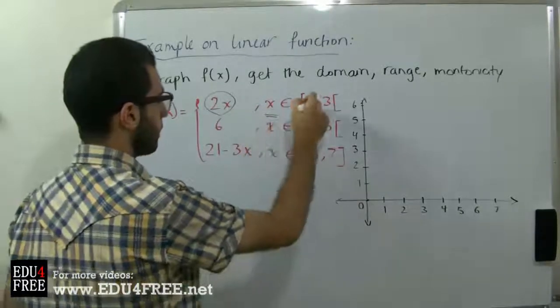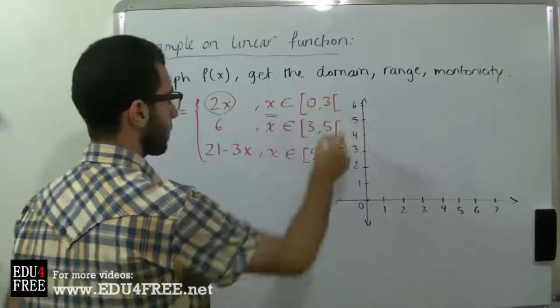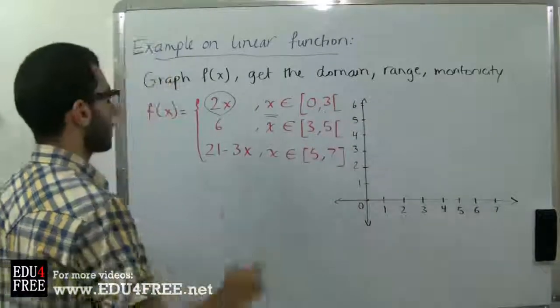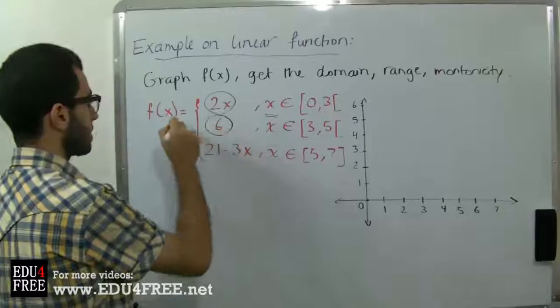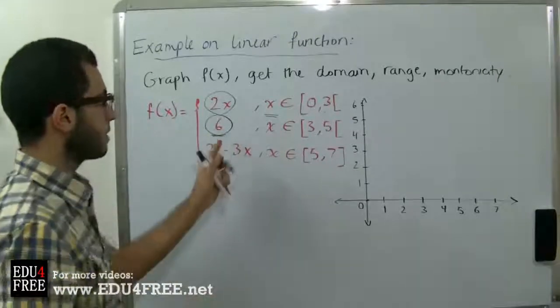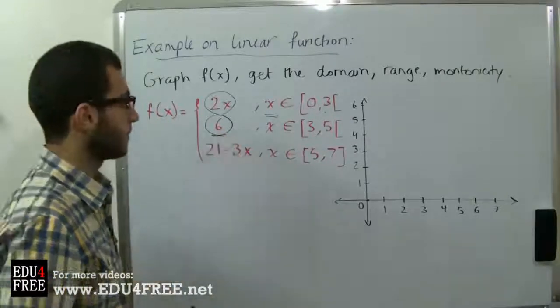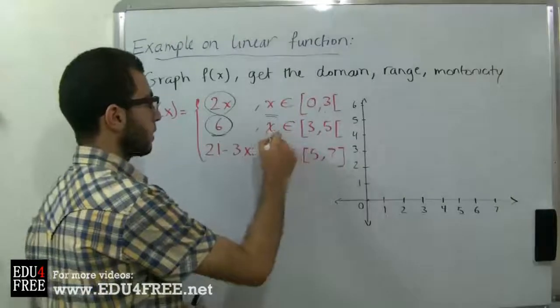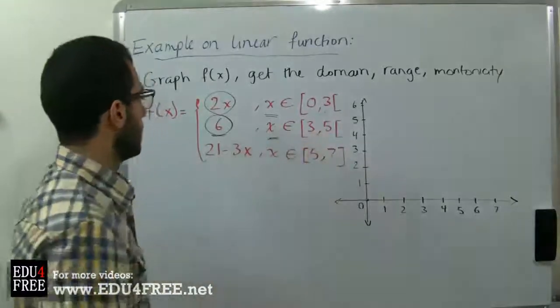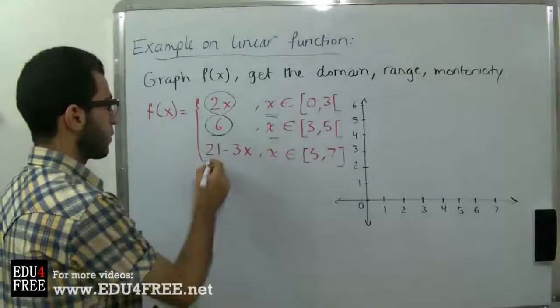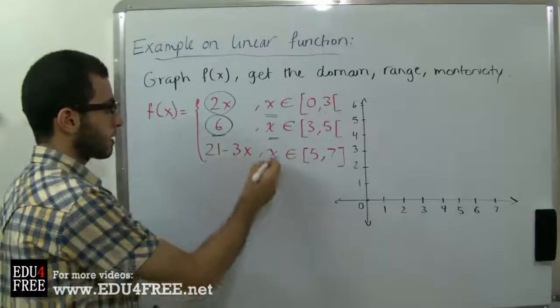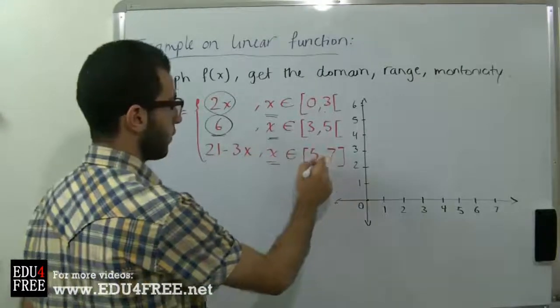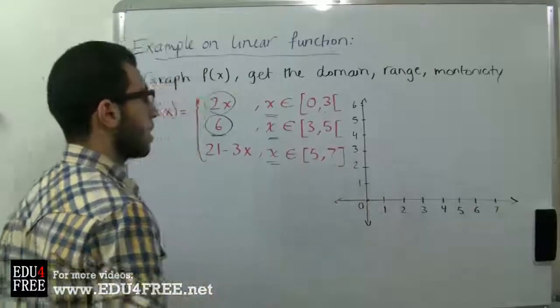Then we have f(x) equals 6, this is a constant function in the interval from 3 to 5. Then f(x) equals 21 minus 3x in the interval 5 to 7.